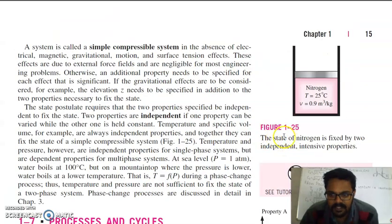Like this example here, the state of nitrogen is fixed by two independent intensive properties. One is temperature, which is an intensive property independent of the amount of the system. If you cut it, temperature will remain the same. And specific volume. So these properties will define the state of this nitrogen gas.